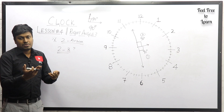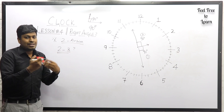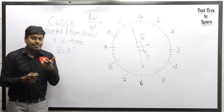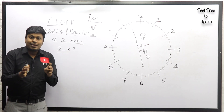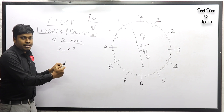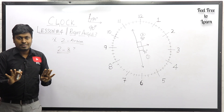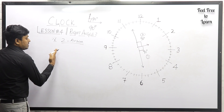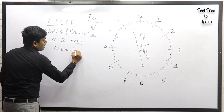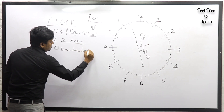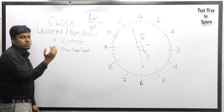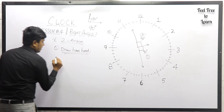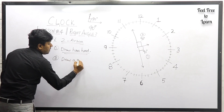All the steps are the same as the previous lessons. Note number one: 55 minute spaces are gained by the minute hand in 60 minutes. The same logic applies here. The only difference is we get two answers. Step number one: draw the hour hand pointing somewhere between the given timing. Step number two: draw a perpendicular line to the hour hand, which represents the minute hand.